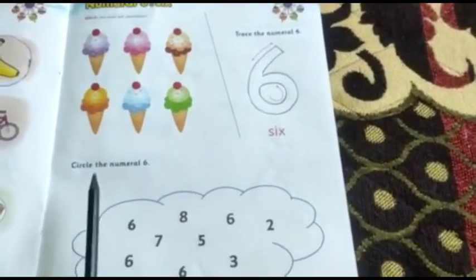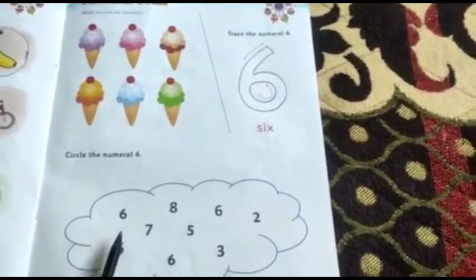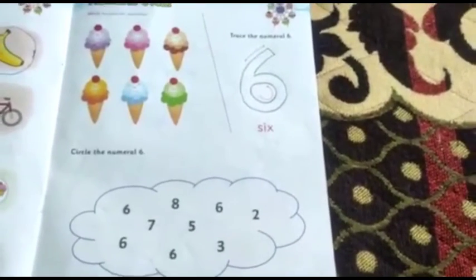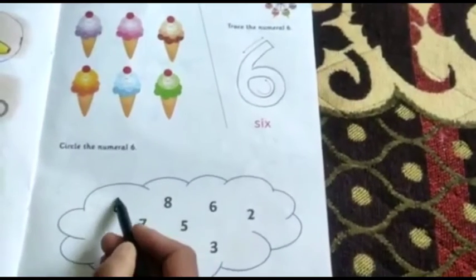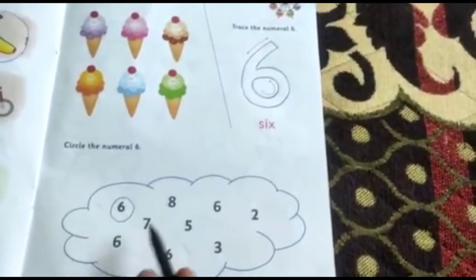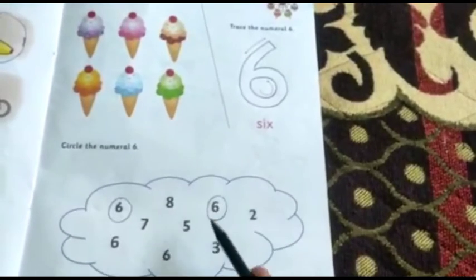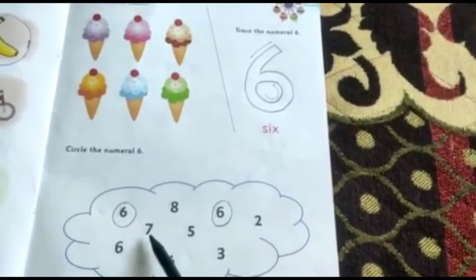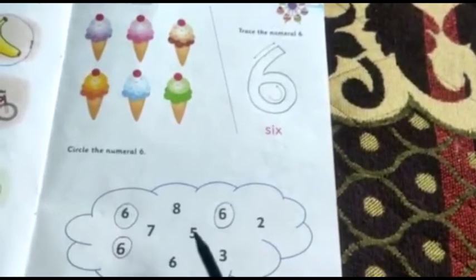Now, what do we have to do? Circle the numeral six. We have these digits, these numerals given here. We have to find them. Let's find them. This one is numeral six. We will circle this. This is eight, this is six, this is two, seven, five. This is six. We will circle it like this.